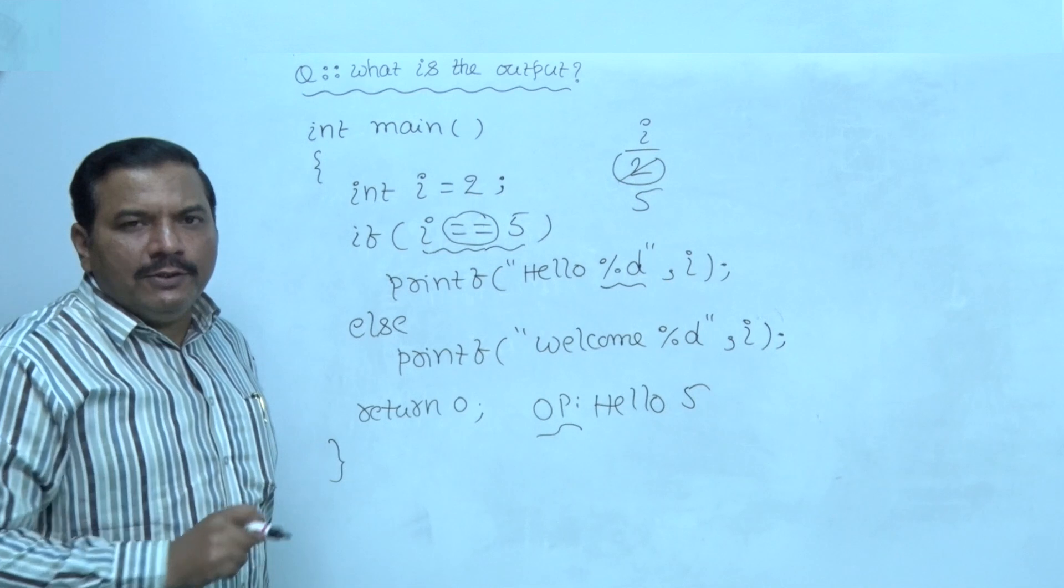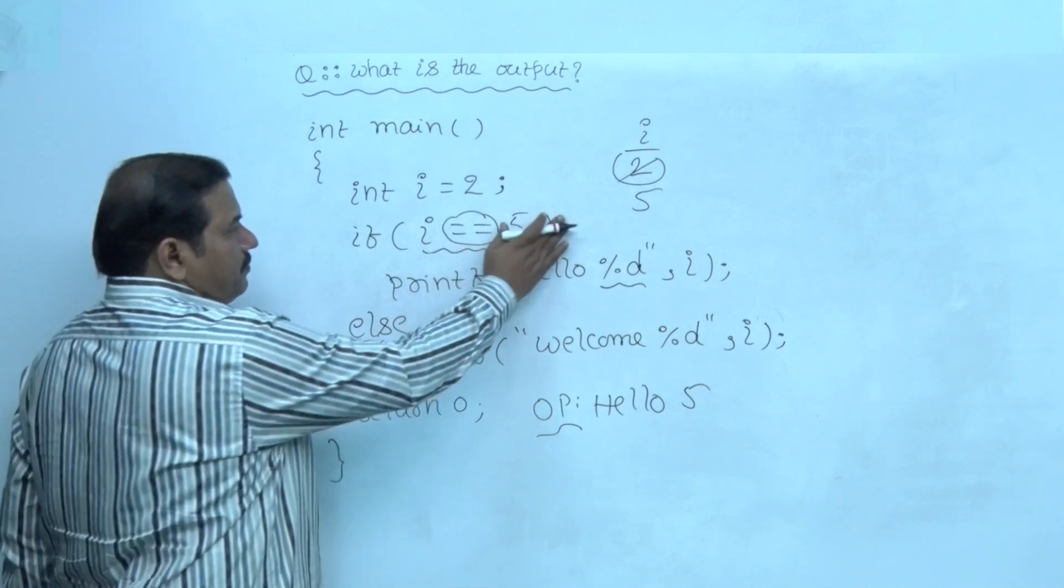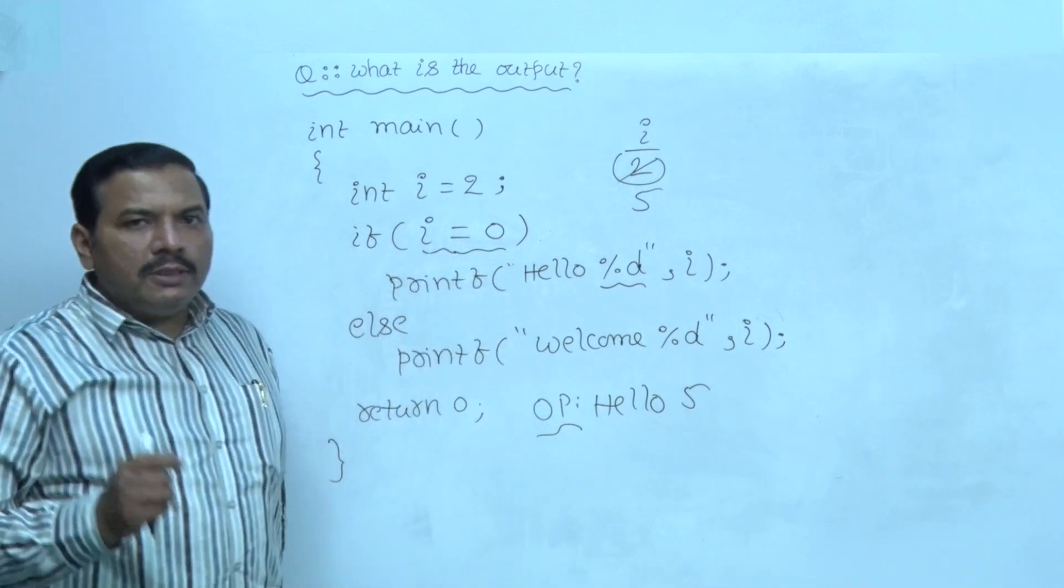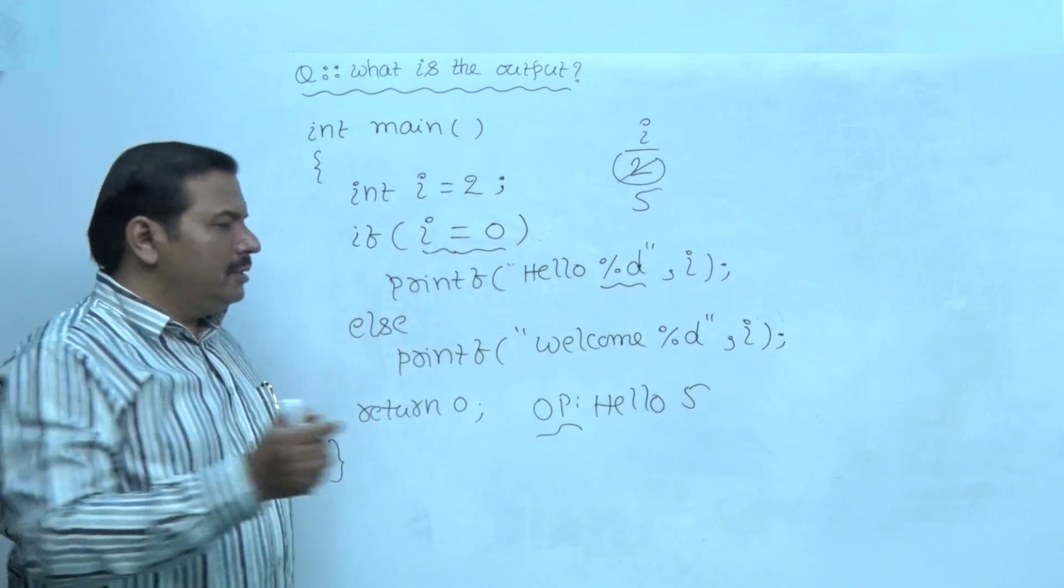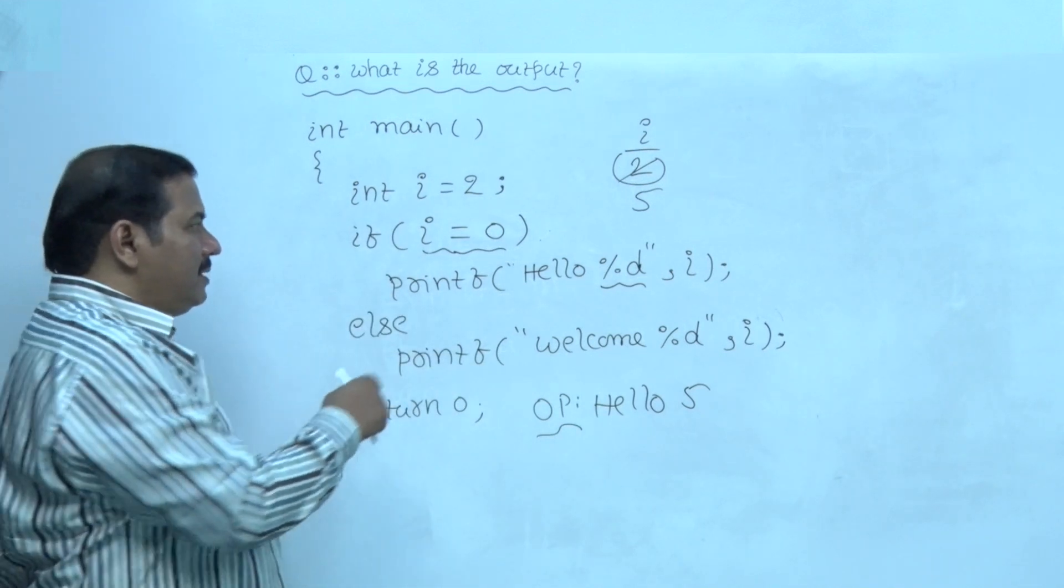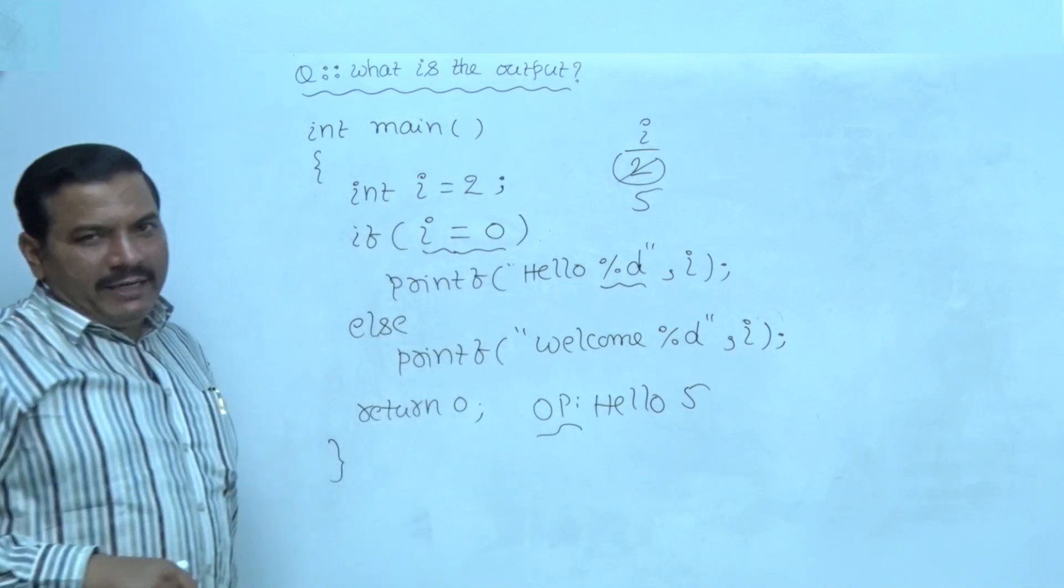Let me show one more example. Now, I used a single equal to symbol and second operand is 0. This time, 0 is assigned to i.